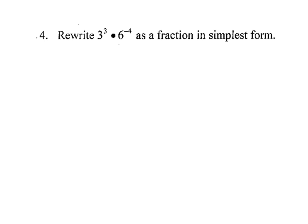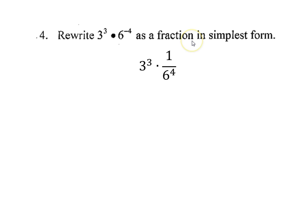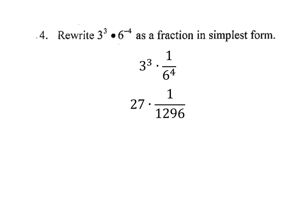So if we're going to write this as a fraction in simplest form, we need to take a look at the 6 to the negative 4th. 6 to the negative 4th can be rewritten as 1 over 6 to the 4th, where this whole idea of a fraction is going to come into play. So if I want to rewrite 6 to the negative 4th with a positive exponent, I make it a fraction and put 6 to the 4th in the denominator, because 6 to the negative 4th is the same thing as 1 over 6 to the positive 4th. And then 3 to the third can just stay as 3 to the third, because 3 to the third can be evaluated. 3 to the third is 27.